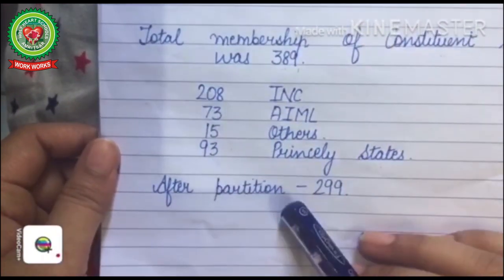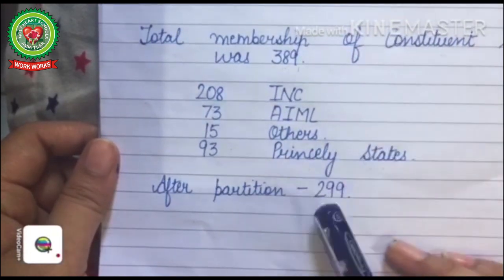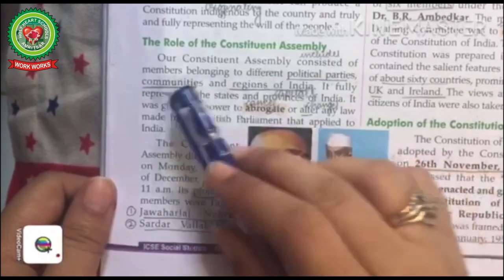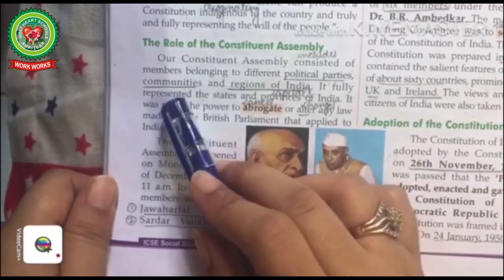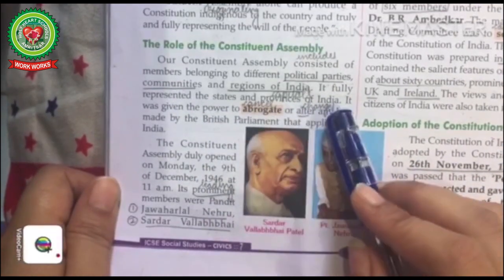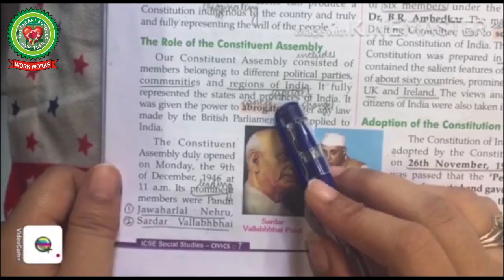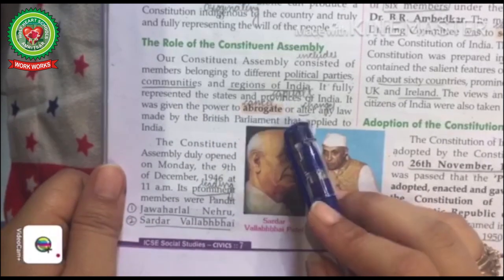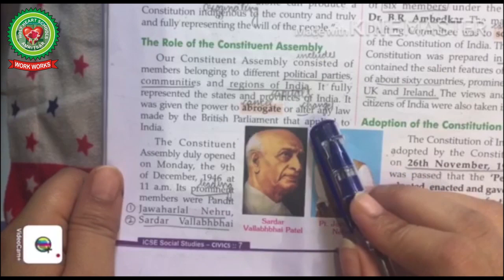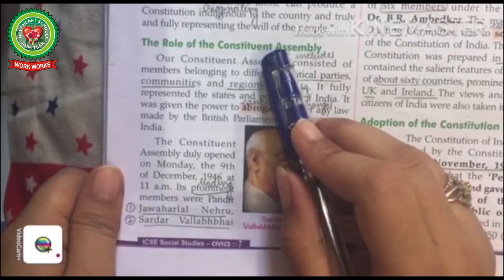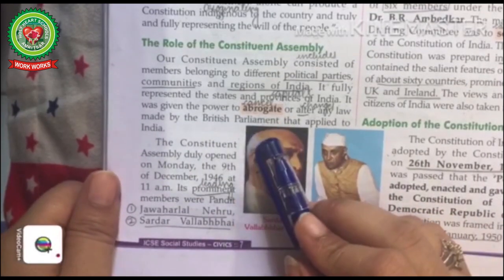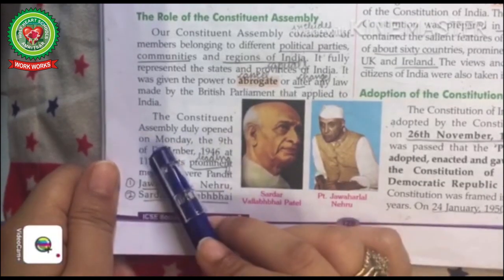After the partition of India and Pakistan, the total number of members in the Constituent Assembly became 299. The Constituent Assembly consisted of members belonging to different political parties, communities, and regions of India, fully representing its states and provinces. It was given the power to abrogate or alter any law made by the British Parliament that was applied to Indians. 'Abrogate' means cancel; 'alter' means change.